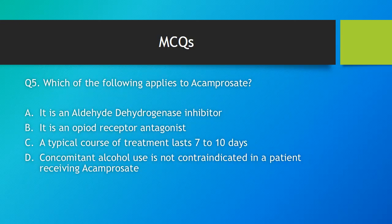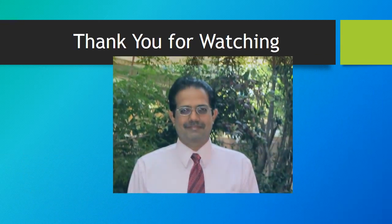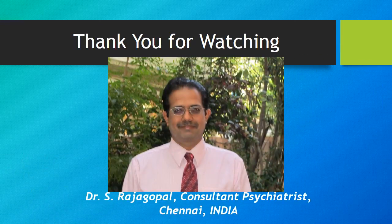The final question: which of the following applies to acamprosate? The correct answer is option D — concomitant alcohol use is not contraindicated in a patient receiving acamprosate. Option A is incorrect because that applies to disulfiram. Option B is incorrect because that applies to naltrexone. Option C is incorrect because maintenance treatment for one year is recommended, and the treatment that lasts 7 to 10 days applies to an alcohol detoxification regime to prevent withdrawal symptoms. That brings us to the end of this presentation — thank you for watching, and hope you found the lecture useful.